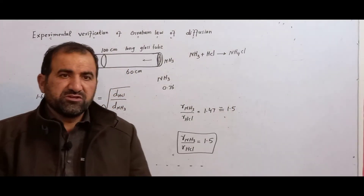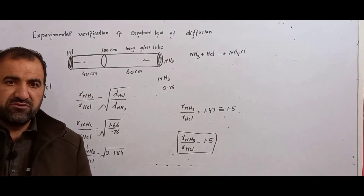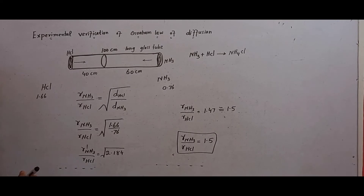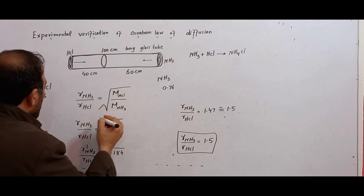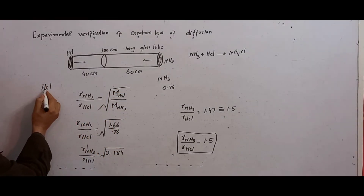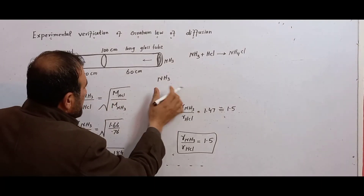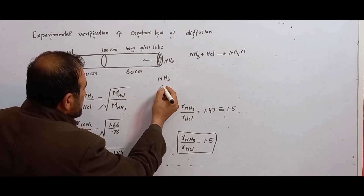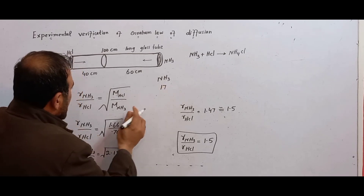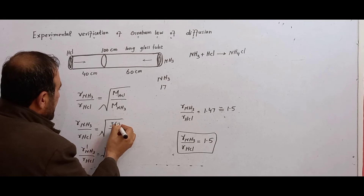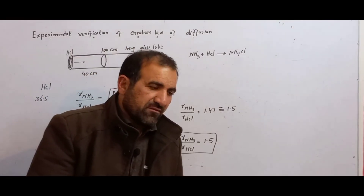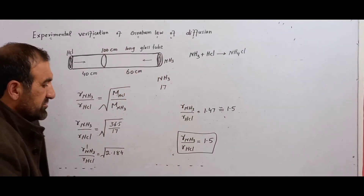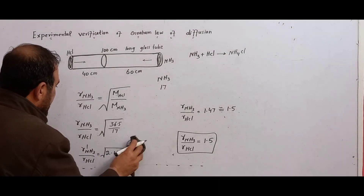The rate of diffusion of two gases is inversely proportional to the square root of their molecular masses, since density is proportional to molecular mass. Using molecular masses: HCl = 36.5 amu and NH3 = 17 amu. We calculate sqrt(36.5 / 17).